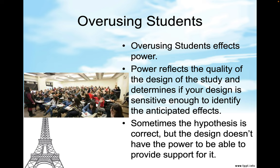Sometimes the hypothesis is correct, but the design doesn't have the power to provide support for it. One of the things I ask in an article critique is: what is the population, and does this population reflect what the researchers say it reflects? Potentially you're dealing with 15- to 19-year-olds — can you generalize that to a total population? And the answer is probably no.